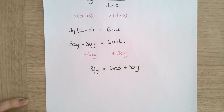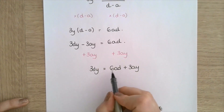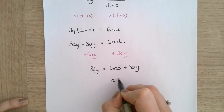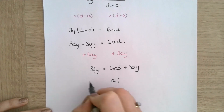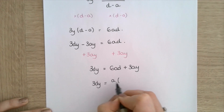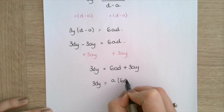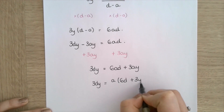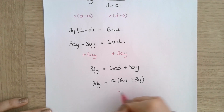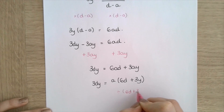I want to make a the subject so I'm going to factorize out the a from both of these terms. So 3dy equals a brackets 6d plus 3y. And then to make a the subject I'm going to divide both sides by 6d plus 3y.